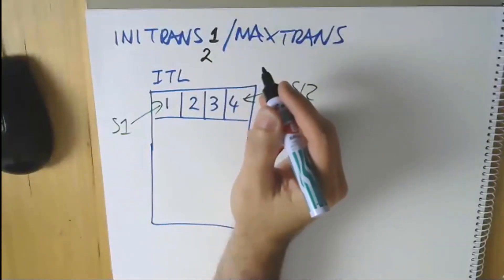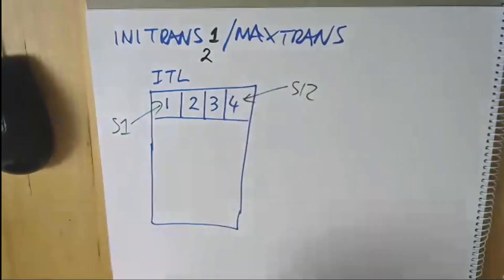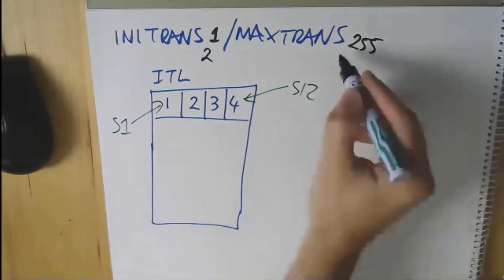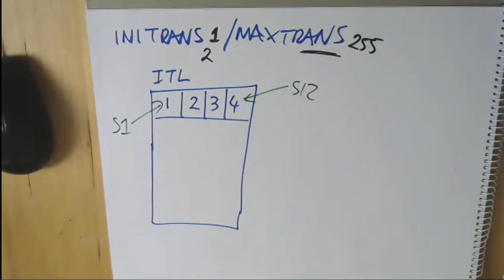You get a couple no matter what. MAXTRANS defaulted to 255, which is the maximum number of transactions you can still have on a given block, but you could set it to lower. In my lifetime as a DBA I cannot remember a single place that ever set it to anything other than 255 for MAXTRANS.